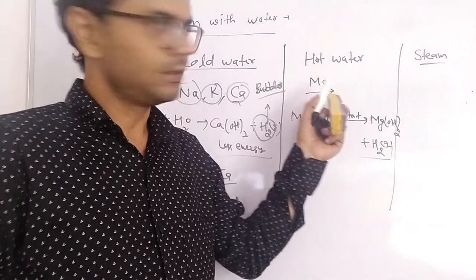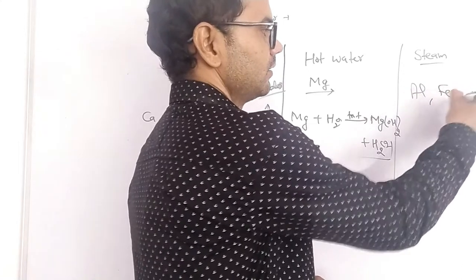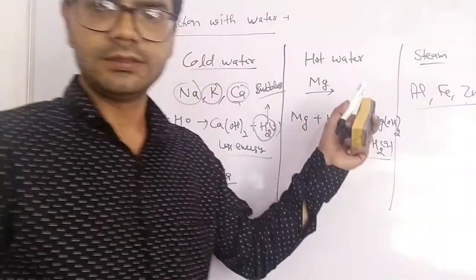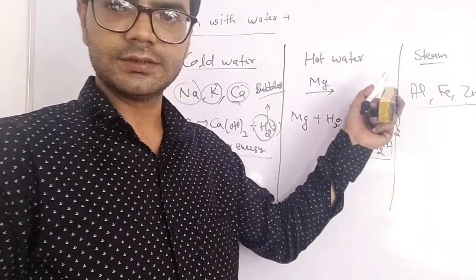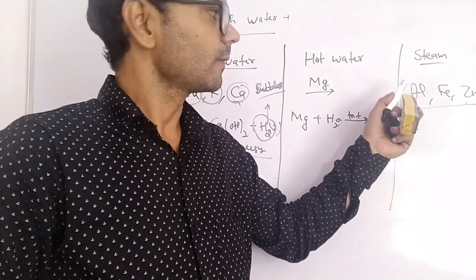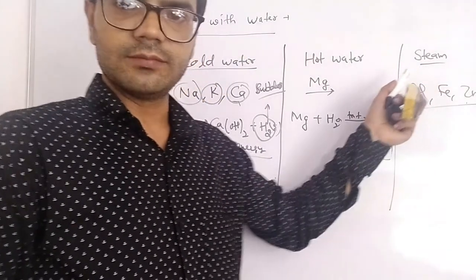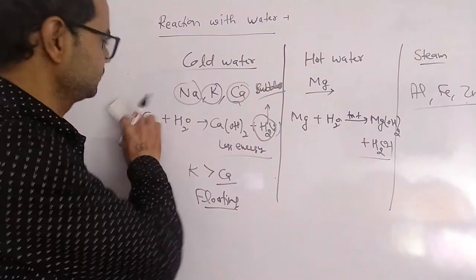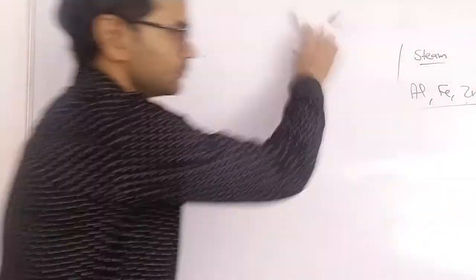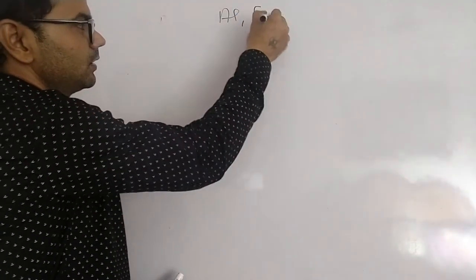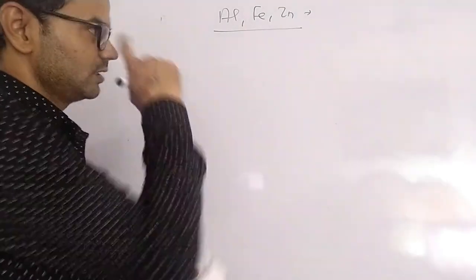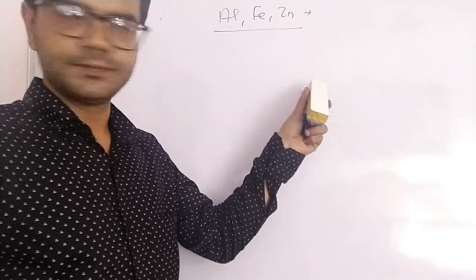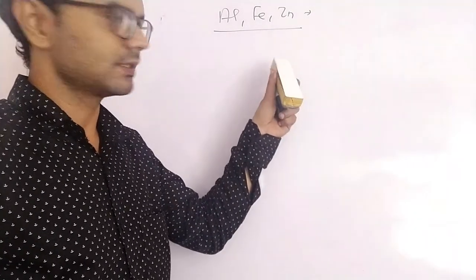Some metals like aluminium, iron, and zinc will not react with cold water or hot water — they react with steam only. Steam is water at 100 degrees Celsius. The key difference is that when reacting with steam, instead of a metal hydroxide, we obtain metal oxides and hydrogen gas is released.